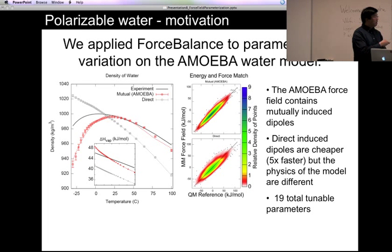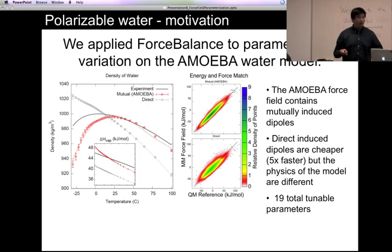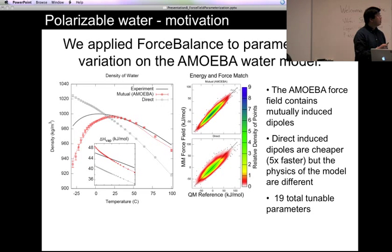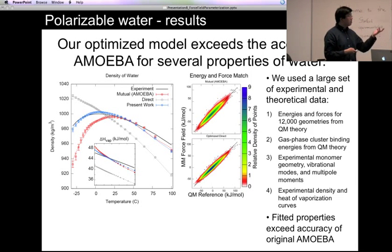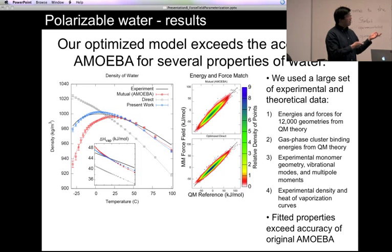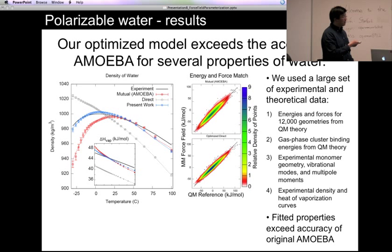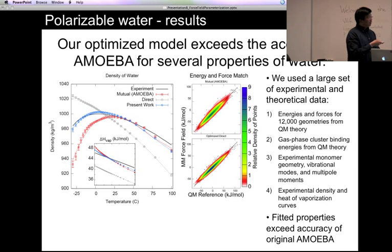This is a good application for Force Balance — there are about 19 tunable parameters in this force field, and we want to see if, using polarization direct, it's possible to recover the accuracy of the original AMOEBA force field, giving a five-times speedup while maintaining a physically reasonable picture of polarization. After running the optimization, a new curve shows that not only do we get the density of water correct around room temperature, but also across the entire temperature range, and the temperature of maximum density is now in the right place.